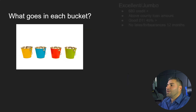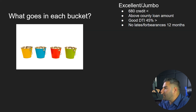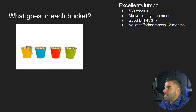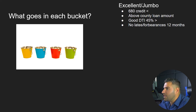Let's start with the excellent/jumbo bucket. Some of these guidelines may vary depending on your lenders, but here's what I think about: if a client has a jumbo-size loan or wants a jumbo-size purchase, I'm thinking right away 680 credit. I check the county loan limit to confirm it's a jumbo, I know their debt-to-income typically has to be less than 45%, and we're very strict on lates, forbearances, and collections with jumbo clients. If they pass all four of those things, I'm like, all right, maybe I've got a good deal I can actually close.